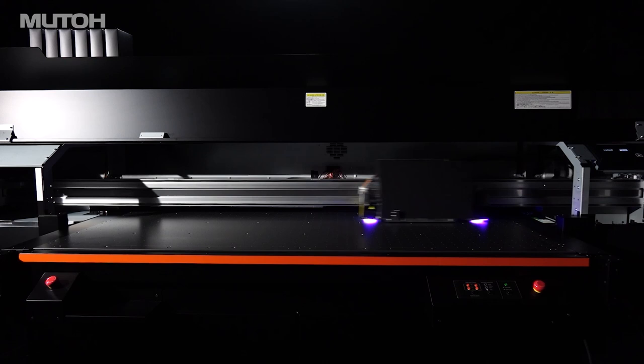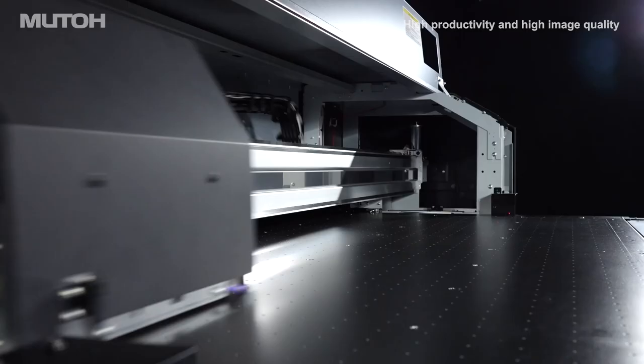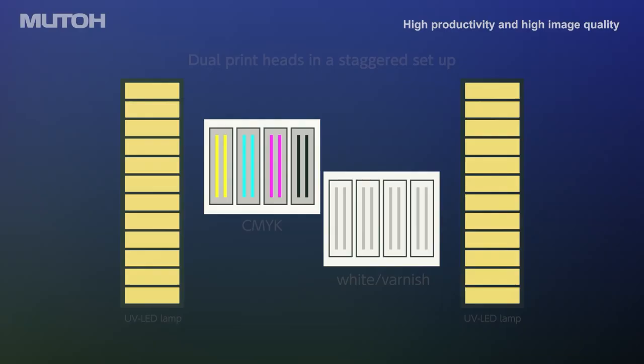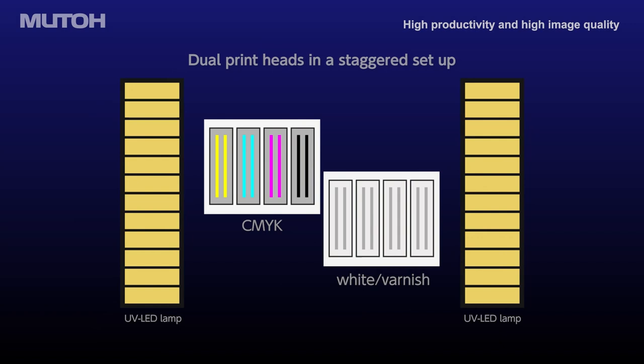Newly developed 4 inch wide UV LED lamps for optimized bi-directional printing are placed on both sides of the print heads. Staggered dual print heads, the first head with CMYK and the second head with white and varnish, enable faster two-layer printing.